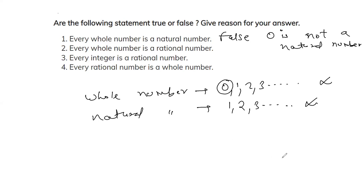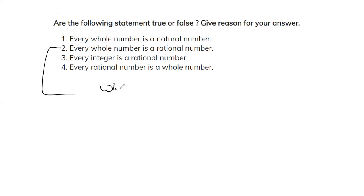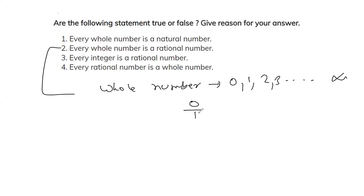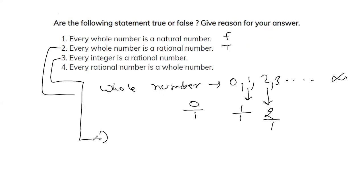Part two: every whole number is a rational number. Whole numbers are 0, 1, 2, 3, and up to infinity. We can write 0 as 0 by 1, 1 as 1 by 1, 2 as 2 by 1 — all in the form of p by q with q not equal to 0. So all whole numbers are rational numbers. This statement is true.